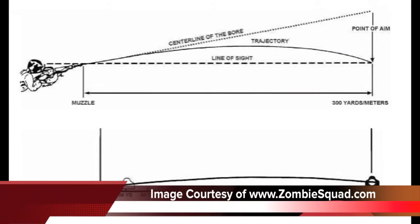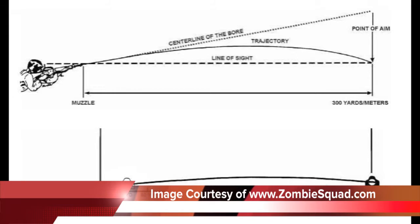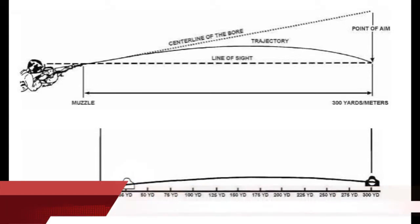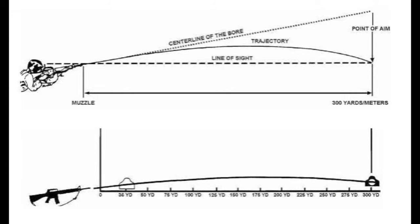Here we have a standard ballistics diagram showing the basic behavior of our projectile after it leaves the weapon system. You'll notice on the top and bottom diagrams, the trajectory of the bullet is arced. This is because the Earth's gravitational pull is pulling our bullet down towards the ground the minute it's set in motion. At greater distances, the further we move our target out from our weapon system, the higher we're going to have to aim to compensate for the Earth's gravitational pull.